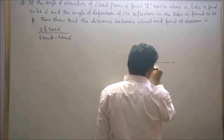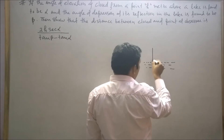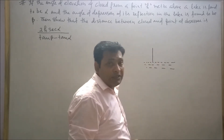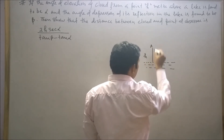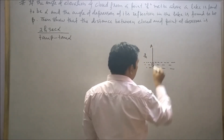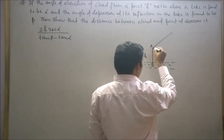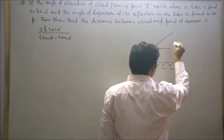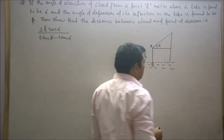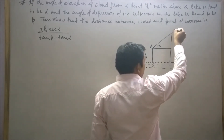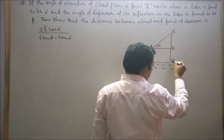Let's say this is our lake. Our observer is standing h meters above the lake. Let's say this is our observer AB. The angle of elevation of the cloud is found to be alpha from the point of observer. This angle will be alpha. Let's say this point is C, this is D, and this is point E.